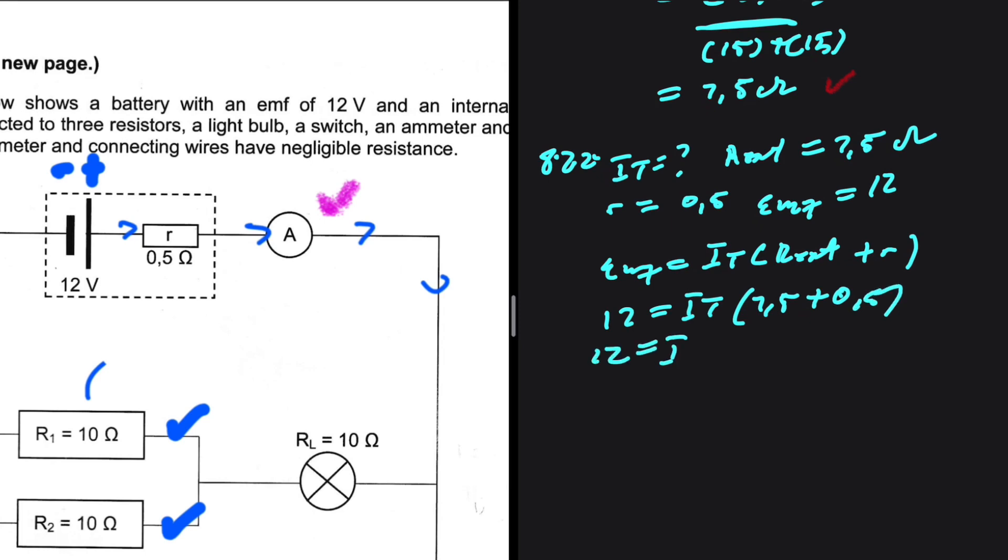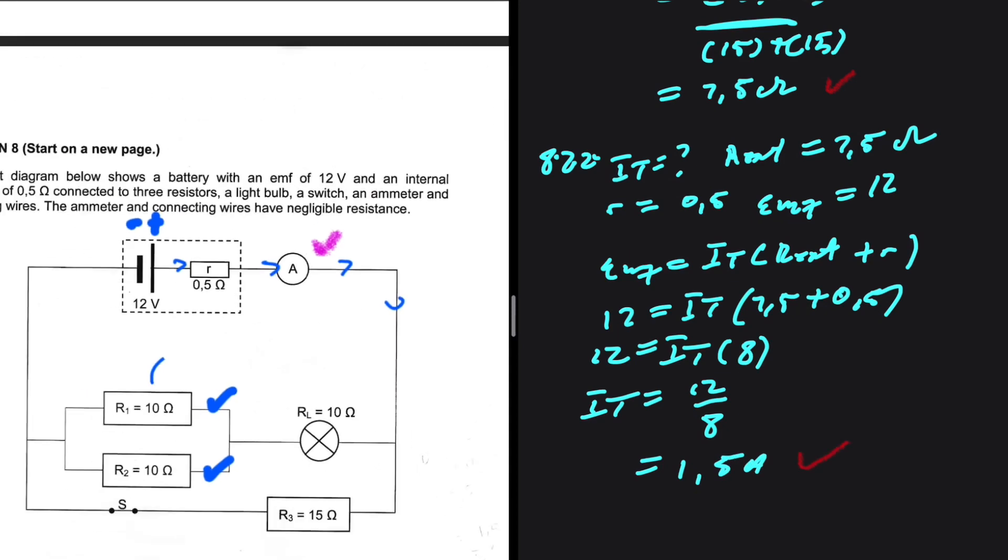So 12 equals I_T multiplied by 8. So I_T will equal 12 divided by 8. That should be 1.5 ampere. So there we go. We have our current.